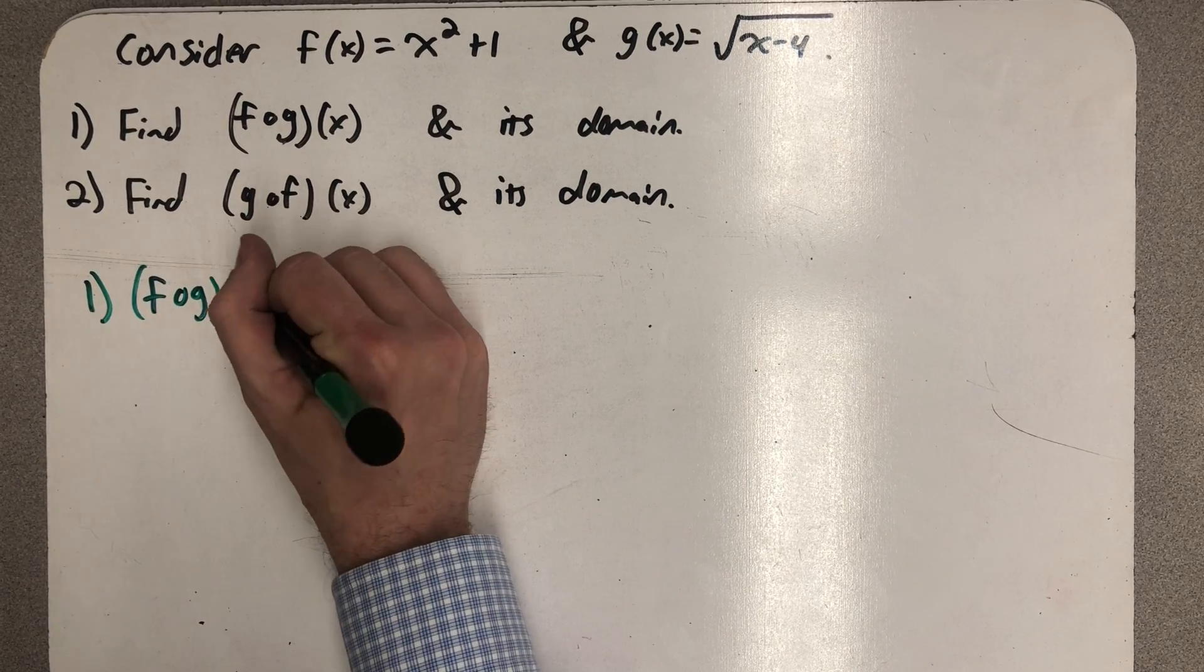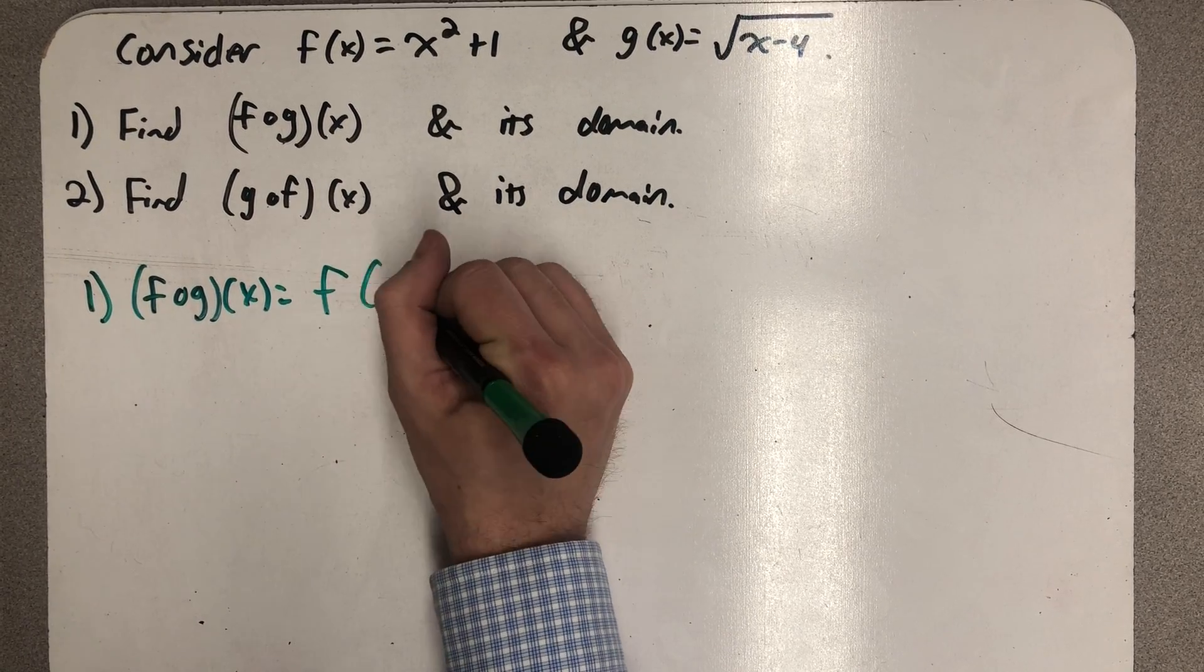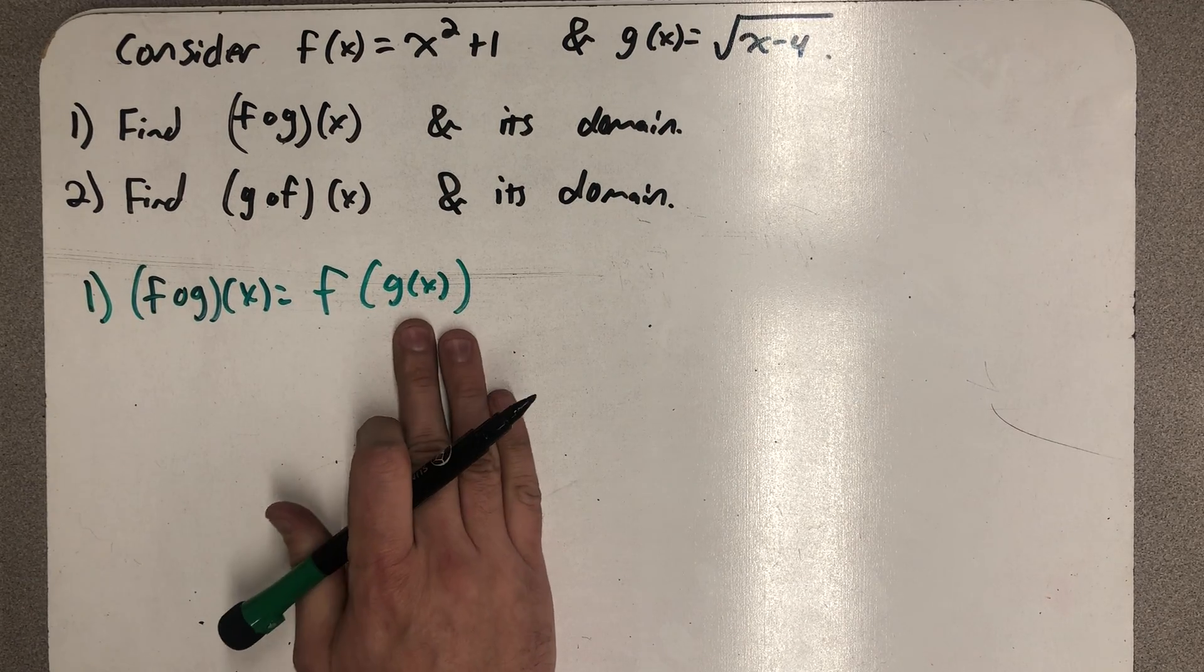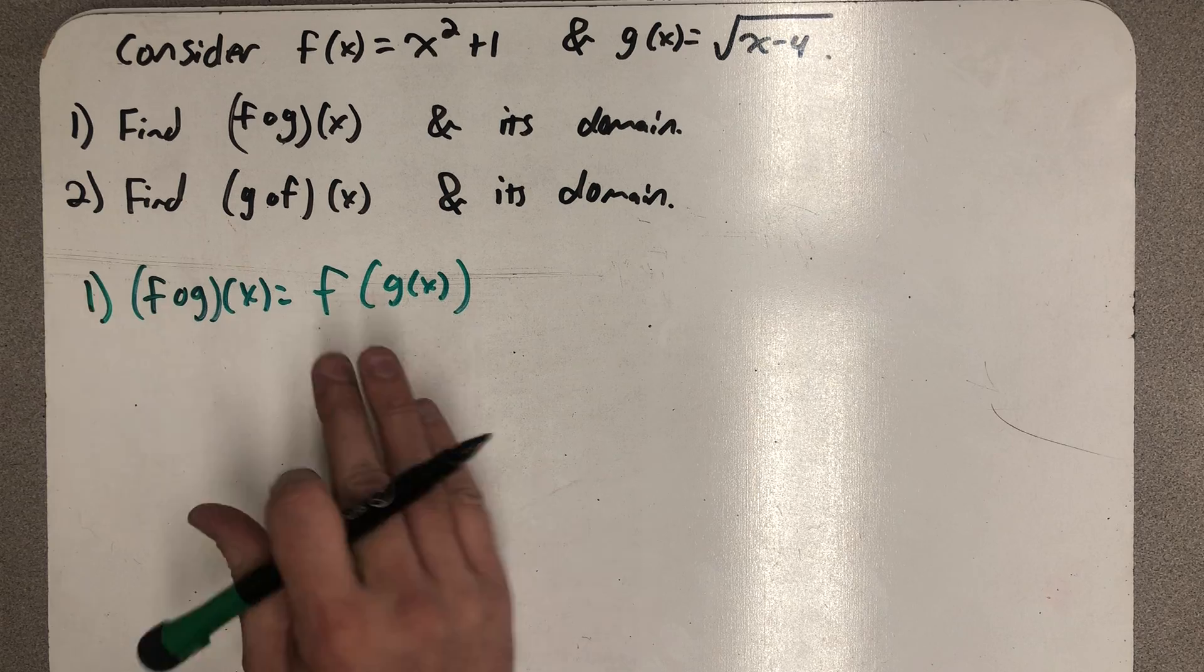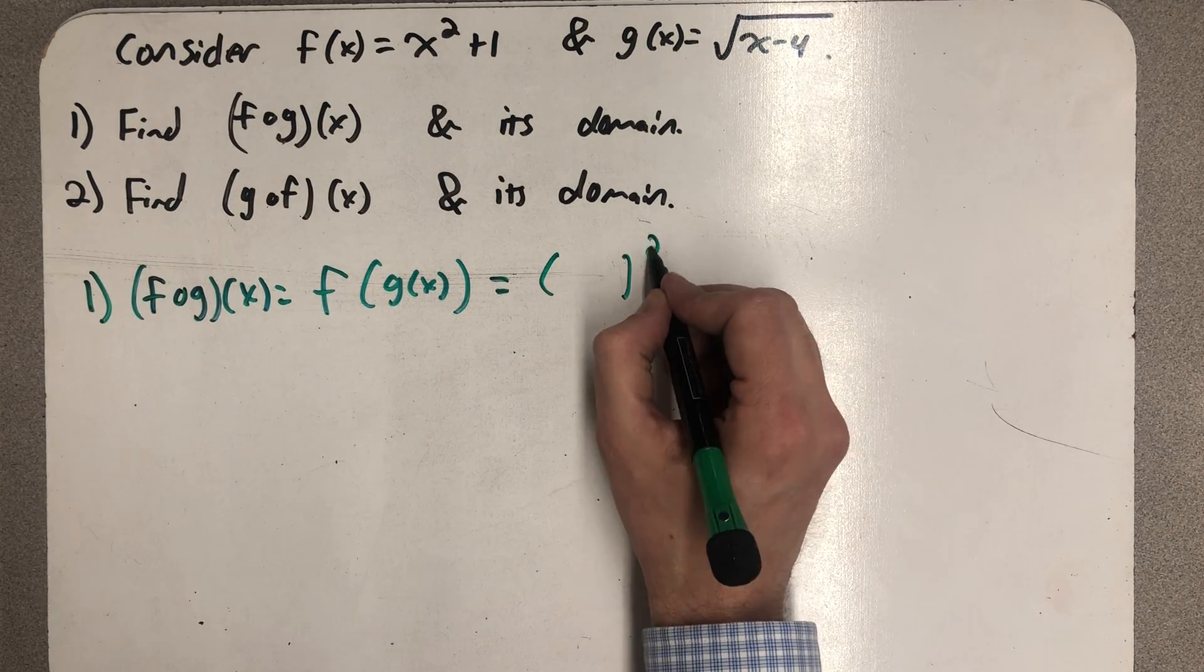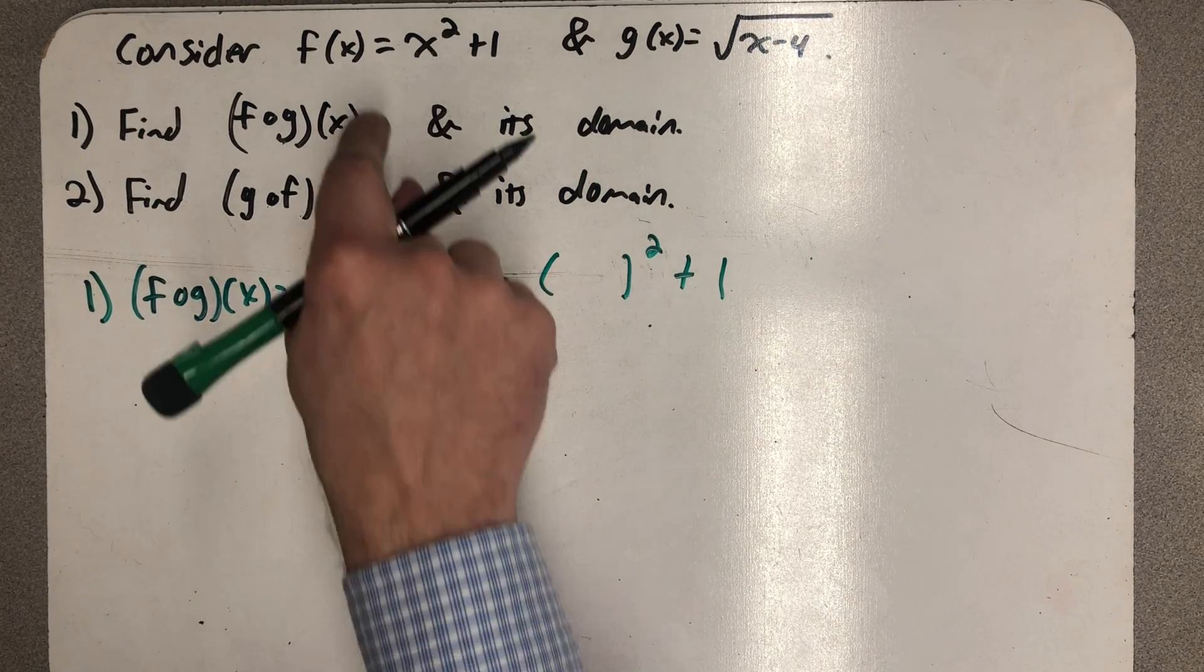f composed with g of x is defined to be f of g of x. I see an inside function called g of x and an outside function called f of x. What that outside function does is it squares something and it adds one to it, and whatever is in this parentheses,